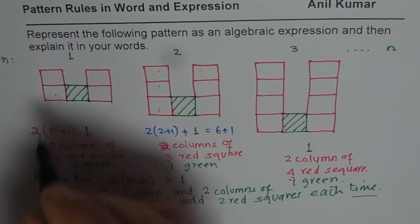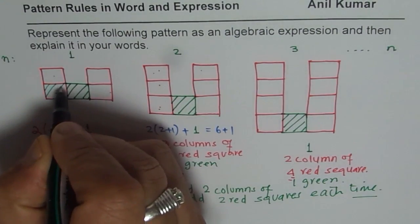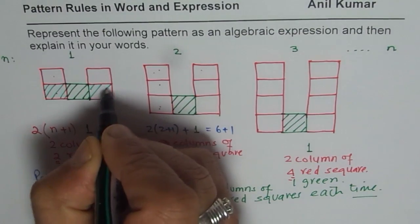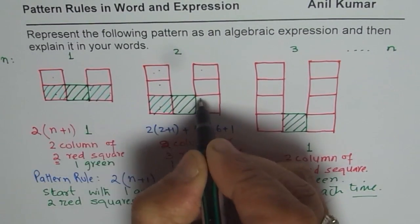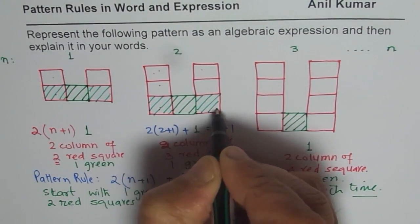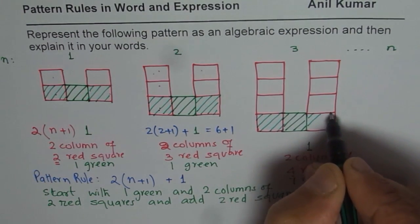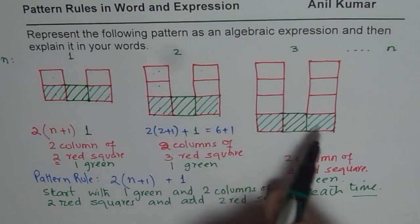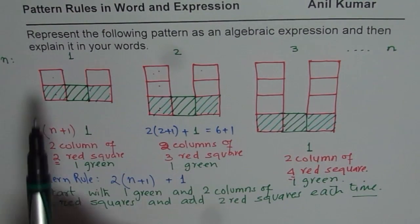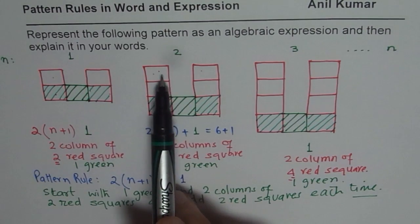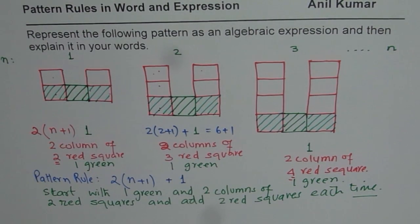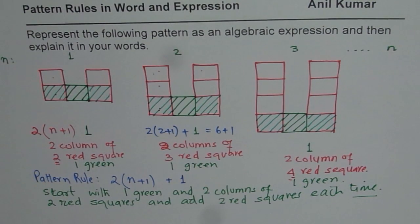See what change I make. Instead of having one green, we could have three greens — fixed. If I change it like this, the pattern rule can change, but the number of squares in each pattern remains the same. Do you see the beauty of the question? So now what I have is three fixed green squares, two columns of one red each, and every time I am adding one red. So you should write down the algebraic expression and explain it in words — that is your practice question. I hope that helps. Thank you and all the best.